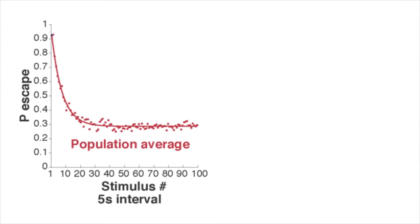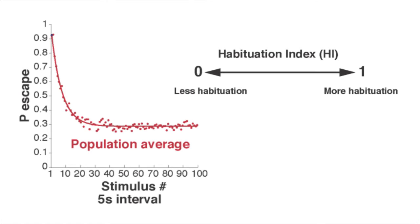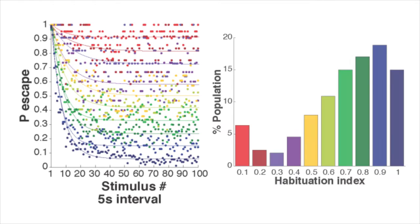The metric we used to quantify the habituation of the startle behavior was the habituation index, which reflects the degree of startle habituation after a series of stimuli. When we binned the habituation indices for the entire population of fish, we were surprised to find great individual variability in the levels of acoustic startle habituation.